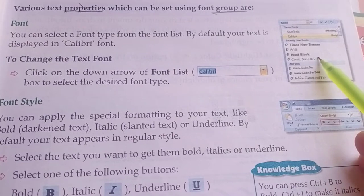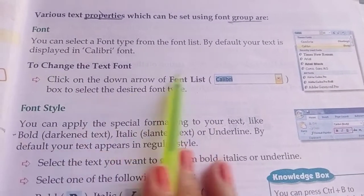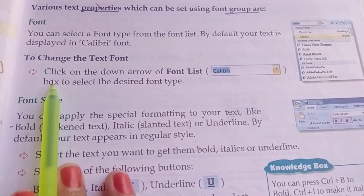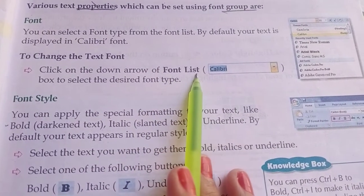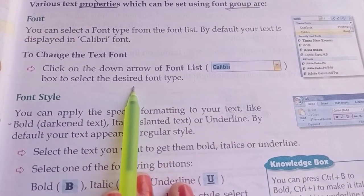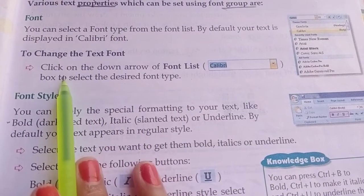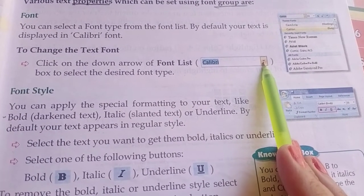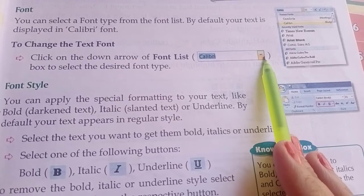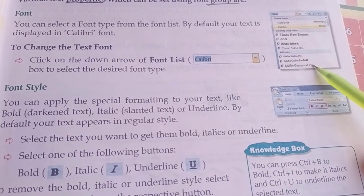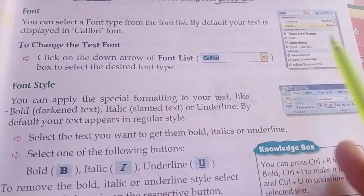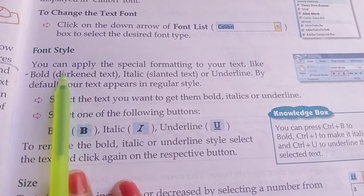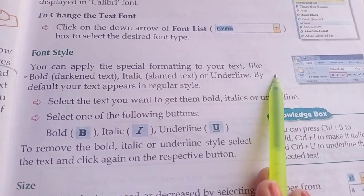To change the text font, first click on the down arrow of font list box to select the desired font type. You can apply special formatting to your text like bold, italic, or underline.